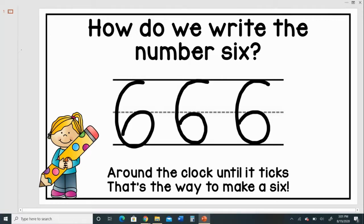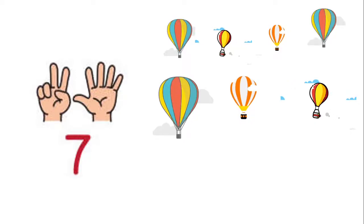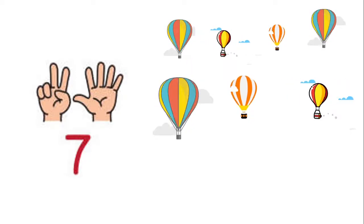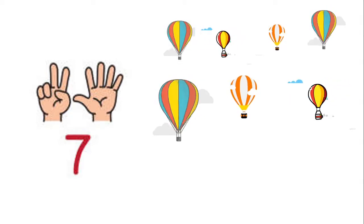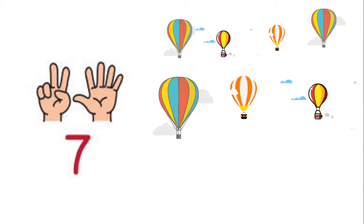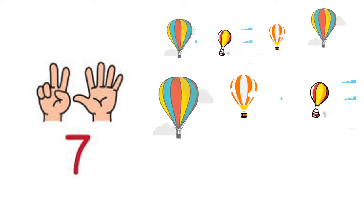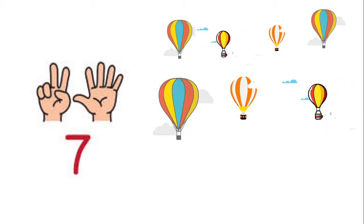What number comes after 6? After 6, we'll have the number 7. So we have 5 and 2 or the reverse. 2 and 5 giving us 7. And here I have 7 hot air balloons.